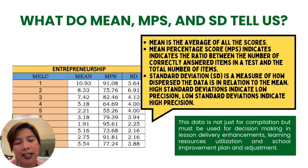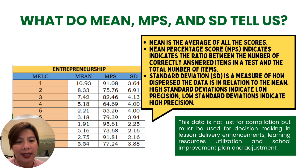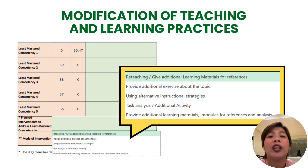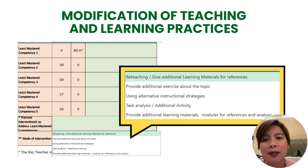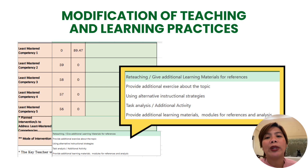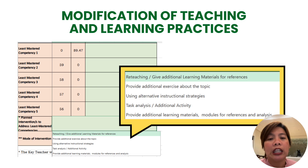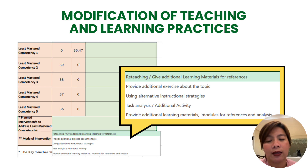What does the division office do with this data? Remember, this data is not just for compilation — it is used for decision-making in lesson delivery enhancements, learning resource utilization, school improvement planning, and adjustments. The frequency of errors — counting how many got the right answer per item, using ZIP Grade — tells us the least mastered and most mastered competencies. This tells us that we must modify our teaching and learning practices, because if a skill is least mastered, the original strategy didn't work, and it must be changed to be more effective.